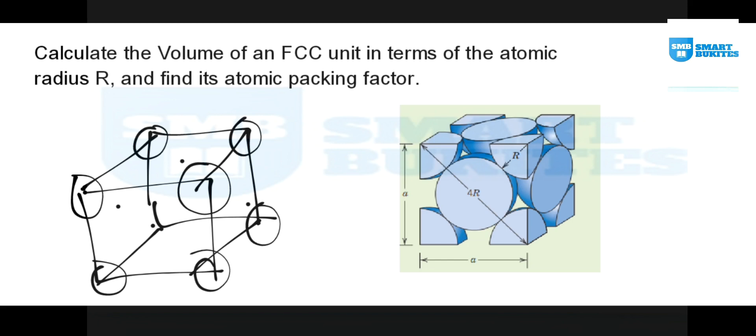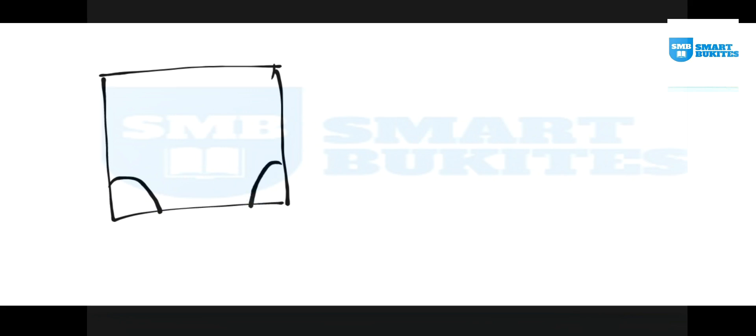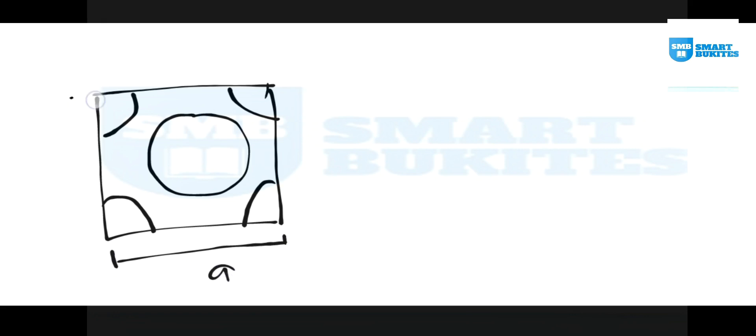For the first question we are told to find the volume of the FCC unit cell in terms of the atomic radius. To do that, let's take one face of the cube. We know that some part of the atom contributes at each corner, another at the center of the face — that is why it's called face-centered cubic. Let's call the side length from here to here 'a' — it's a cube, so it has the same length all over.